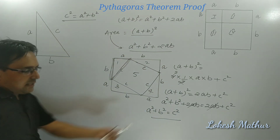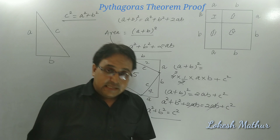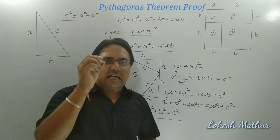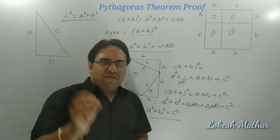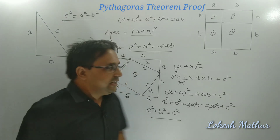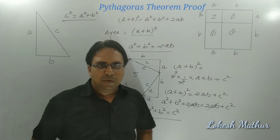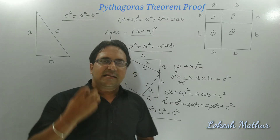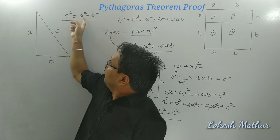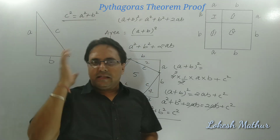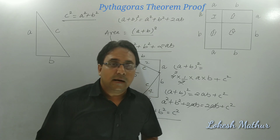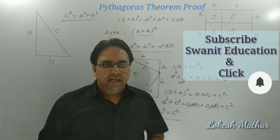So here we have the proof: A square plus B square is equal to C square, which means hypotenuse square is equal to perpendicular square plus base square. This is a simple and interesting derivation of Pythagoras theorem, accessible even for school-going students. These are very small concepts which we discuss in Mathematics. I hope you like this video. Do subscribe to our channel and click on the bell icon. Thank you all.